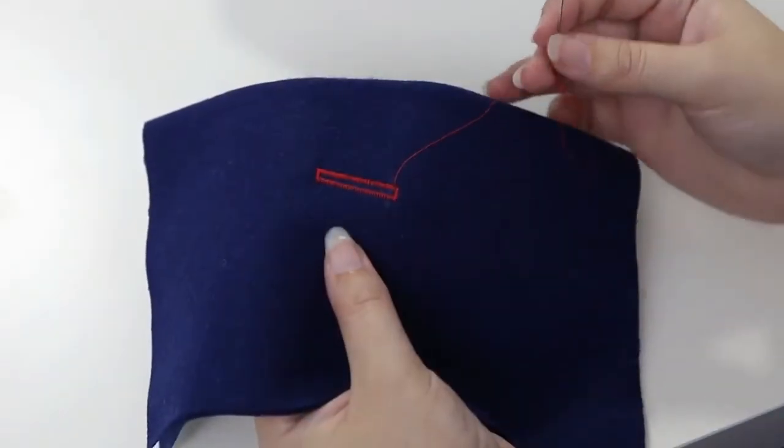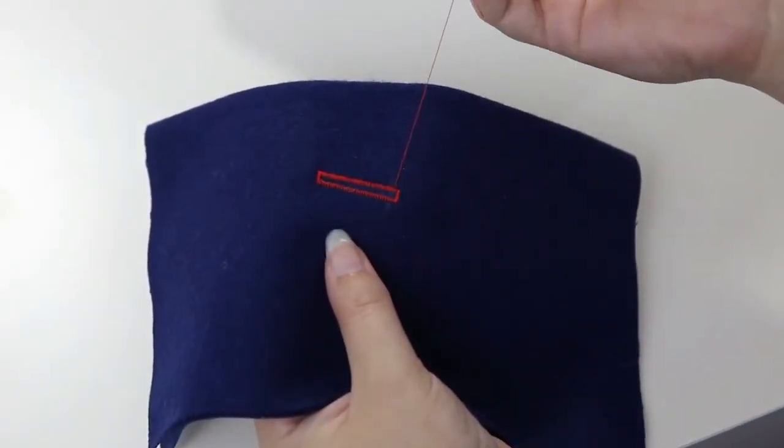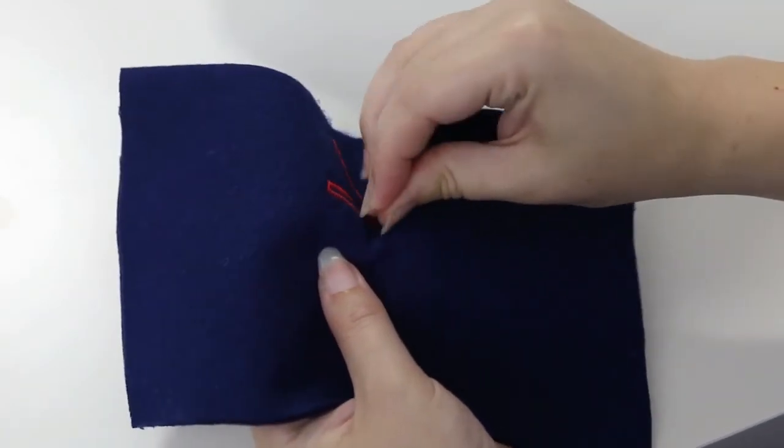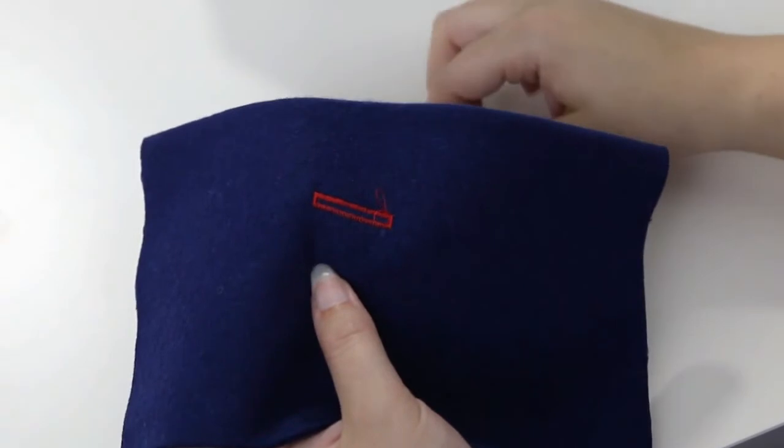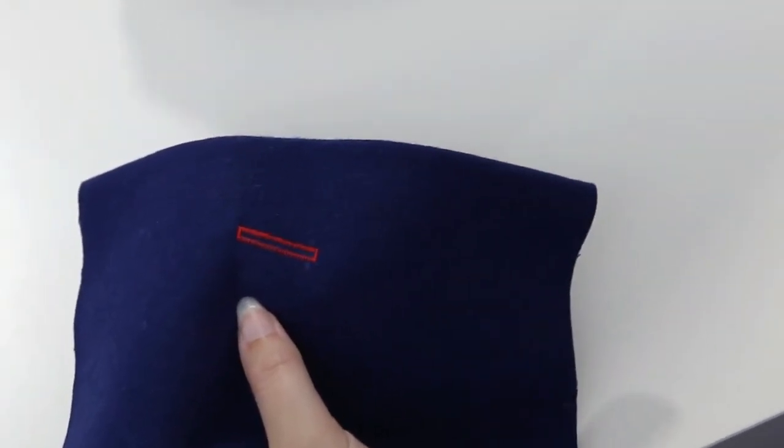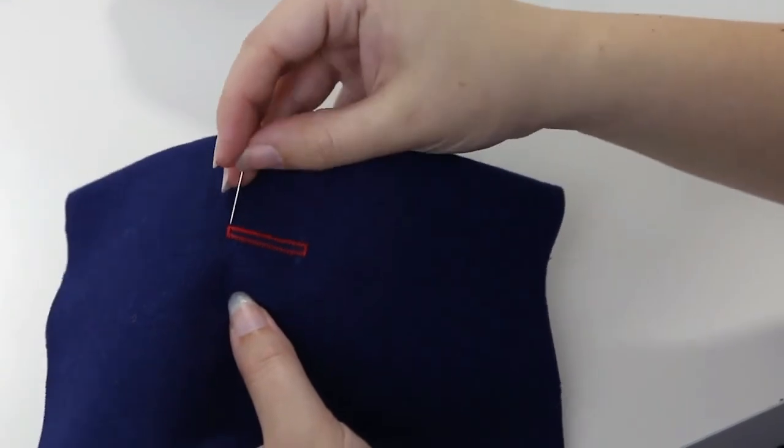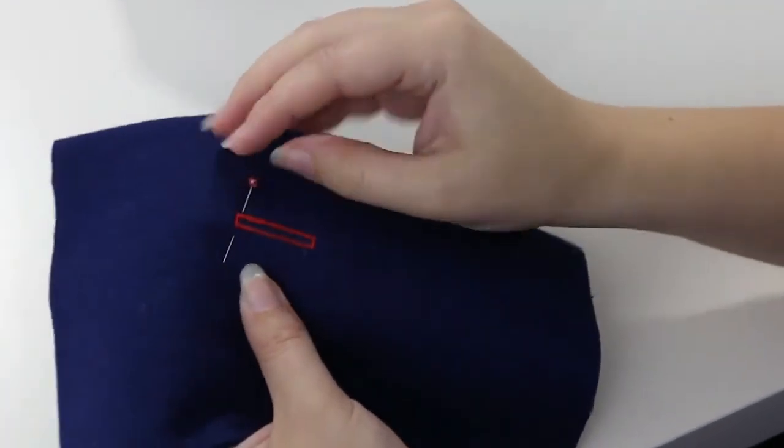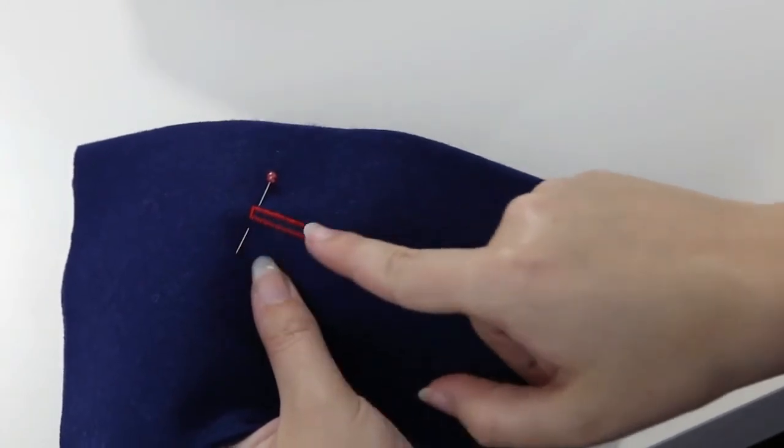To finish off our buttonhole, get a hand sewing needle and push that last thread through to the other side and tie it off. Now to open it up, use a pin and stab it through the top. This protects the upper bar tack so that we don't cut through it.